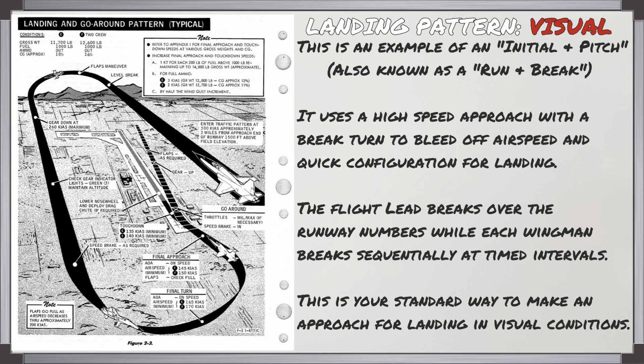The last thing we'll look at before jumping in the airplane is a basic visual landing pattern. The picture on the left is an example of the initial and pitch, also known as a run and brake. It uses a high-speed approach with a brake turn to bleed off extra airspeed, and you have to do a quick configuration for landing. If you're in a formation, the flight lead will break over the runway numbers while each wingman breaks sequentially at timed intervals. This is the standard way to recover your fighter at an airfield for a visual approach.